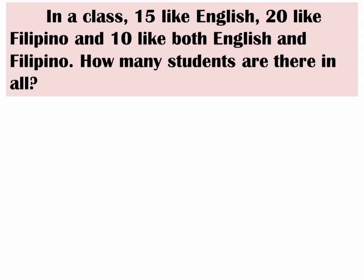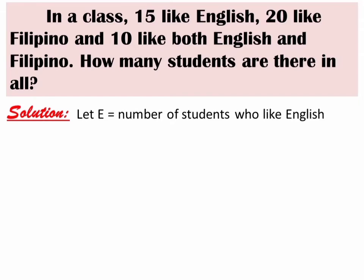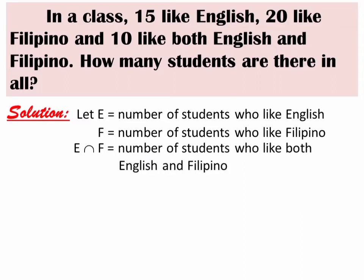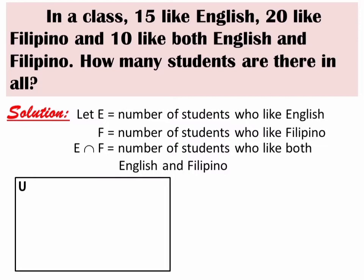Let E represent the number of students who like English, and F represent the number of students who like Filipino. E intersection F represents the number of students who like both English and Filipino. Please take note that we can't just simply add 15, 20, and 10 to get the number of students.